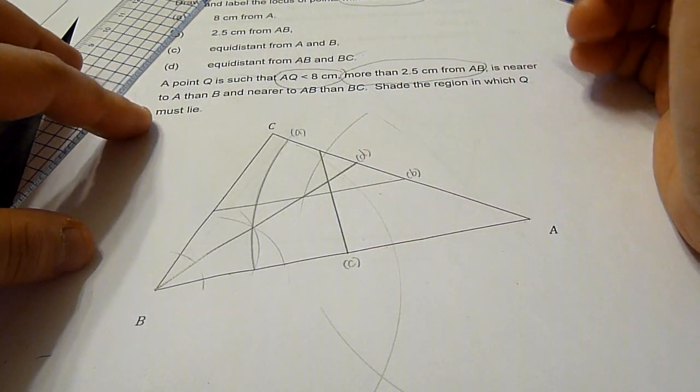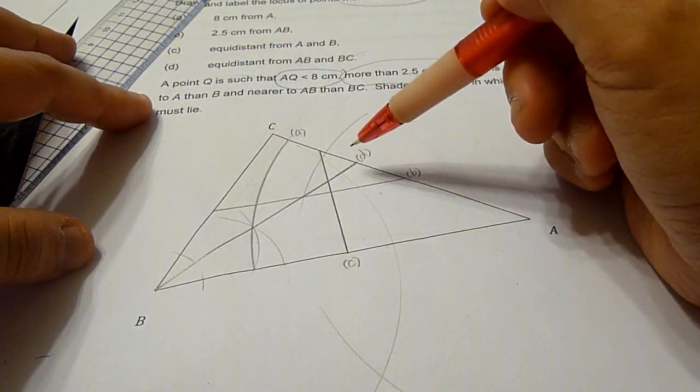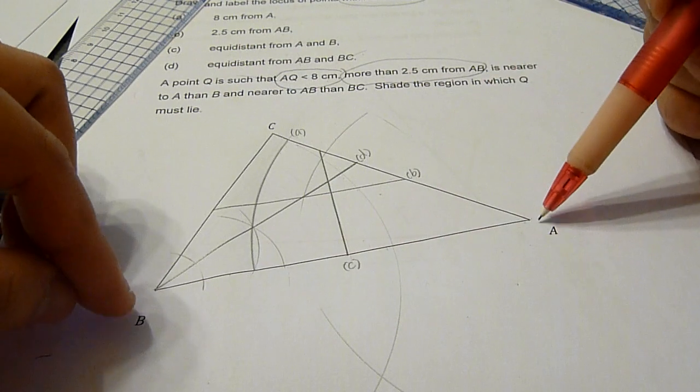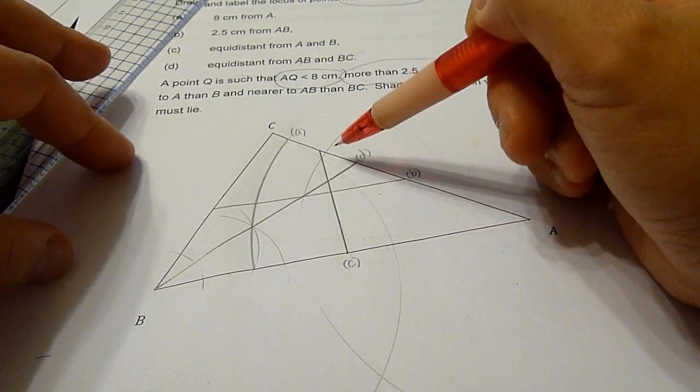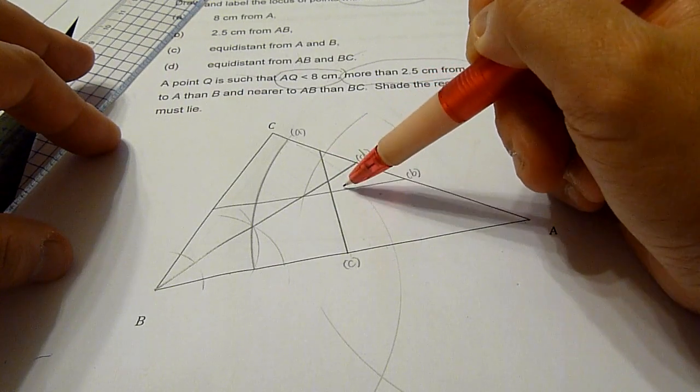However, the next part says it is nearer to A than B. Now, this is a perpendicular bisector of the line AB. And therefore, it means the point will fall within this region now.